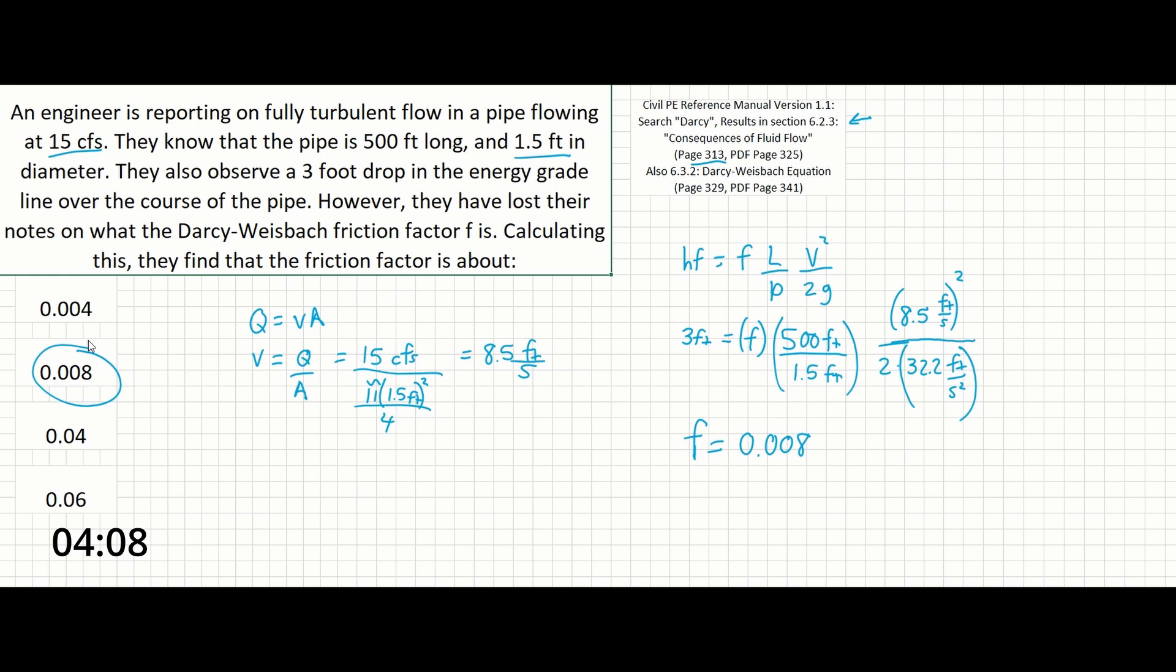We start with our two equations. We recognize that the 3-foot drop is our head loss, and we can find velocity given the flow rate and the diameter of the pipe. That's all it takes to solve this problem.